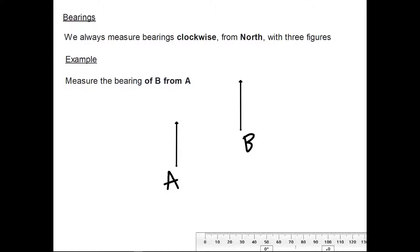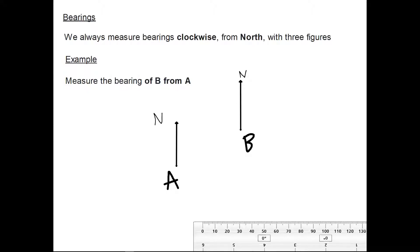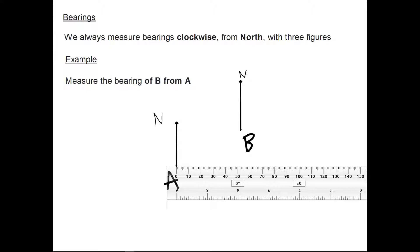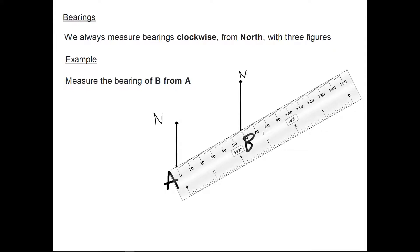For example, if I wanted to measure the bearing of B from A, let's notice first that these are north arrows — the arrows on A and B are both pointing north. What we do is get our ruler first of all and join up A and B. I'm going to draw a straight line which joins up points A and B.